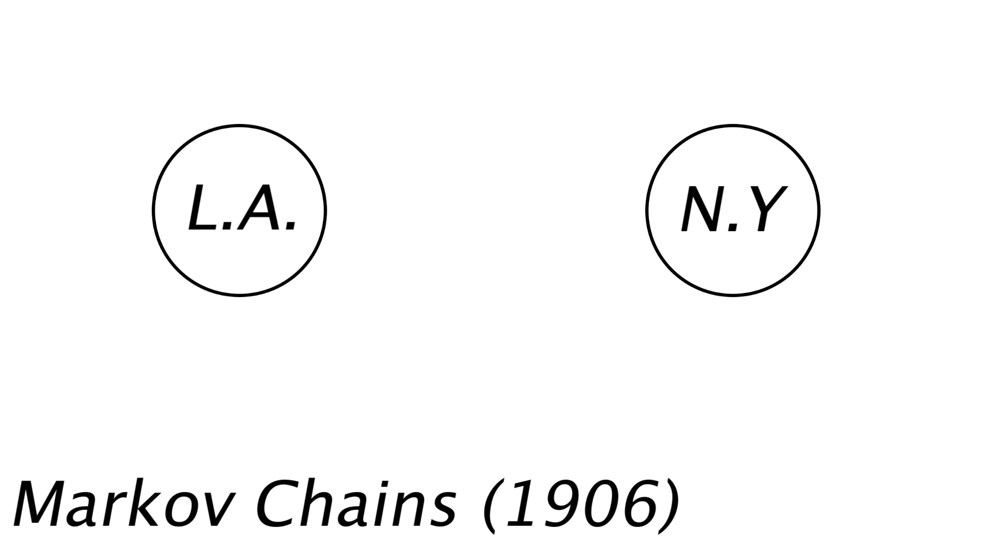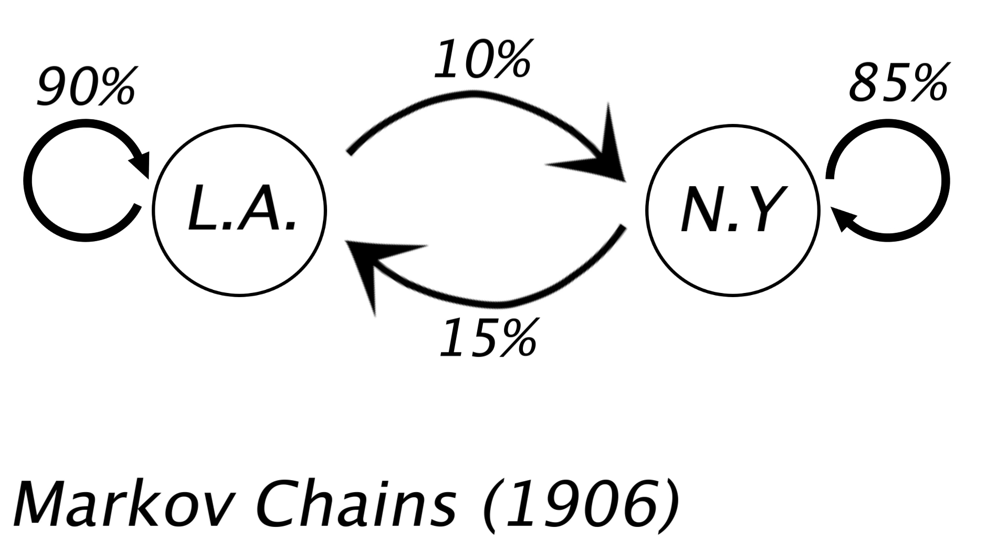So maybe every year 10% of people who live in LA move to New York, meaning that 90% of the people stay. And at the same time every year, 15% of people in New York move to LA, meaning 85% stay. In this example, where you are now matters. Based on if you're in LA or New York, we can predict whether a person may move or not. But saying that a person took this specific series of moves really does not matter in terms of what comes next.